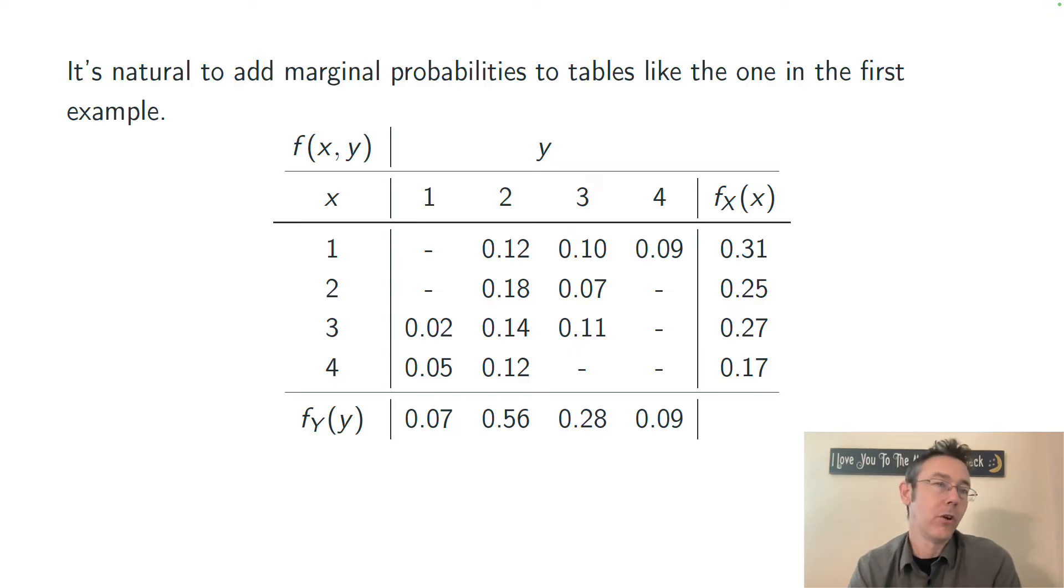This illustration also makes it very clear why we're using the phrase marginal probability and marginal PMF, because we're actually putting these in the margins. Now, both f_X and f_Y are going to be probability mass functions in their own right, and they need to add up to 1, and of course their individual values are going to be between 0 and 1.